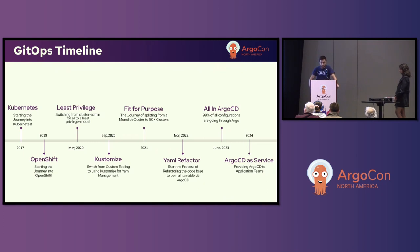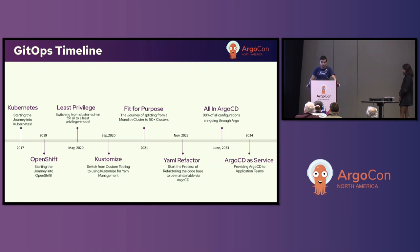In 2021, we started to break down those two monolithic clusters into purpose-built clusters, where we split off CI/CD to their own clusters — for example, one for Jenkins, one for Tekton. We had shared clusters for general-purpose workloads, as well as dedicated clusters for GPU-based workloads or any other custom workload that we decided would be better to have separated from everyone else.